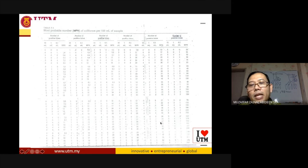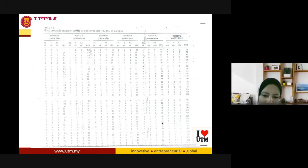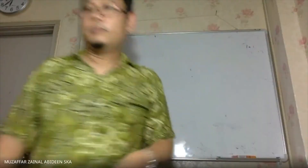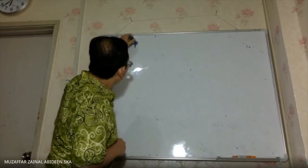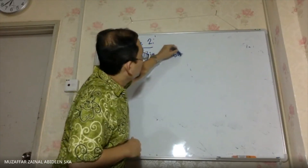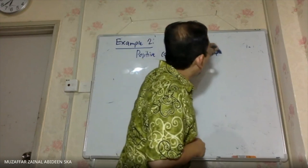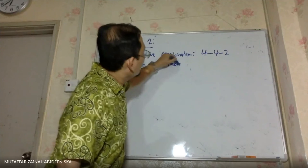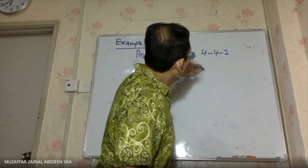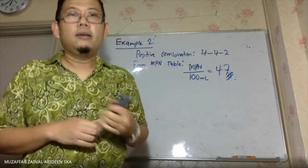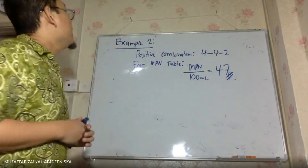The result for the combination 4-4-2 is 47. So the MPN per 100 ml is equal to 47. This is the result from the MPN table for Example 2 with positive combination 4-4-2.